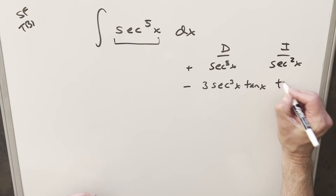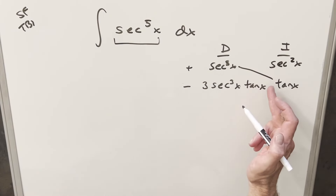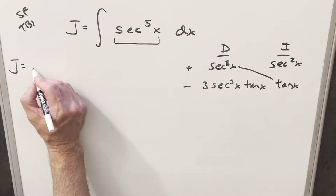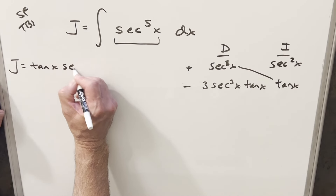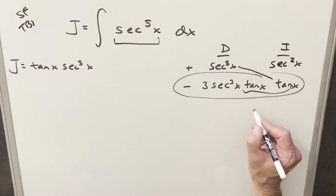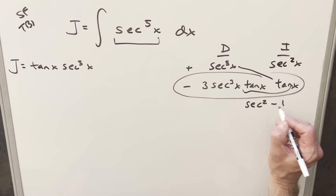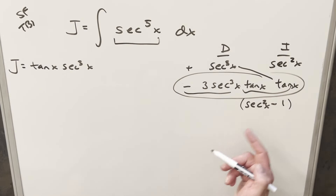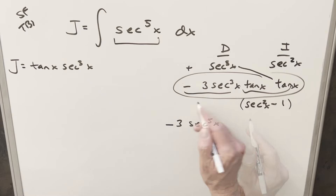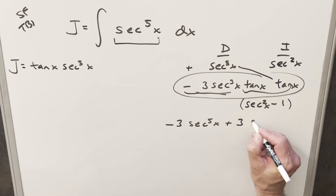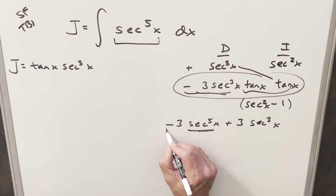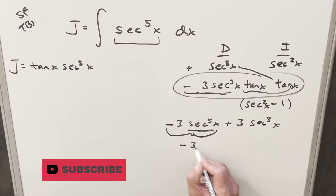Integrating secant squared x gives tan x, same as before. We'll label the integral of sec⁵x as J. So first we have tan x · sec³x on the diagonal. For the remaining integral, we again have tan squared, which we replace with sec²x − 1. Distributing: minus three sec³x · sec²x gives minus three sec⁵x, and the other part gives plus three sec³x. The sec⁵x piece is minus three J, and the sec³x piece brings back our I value, giving plus three I minus three J.